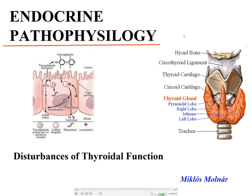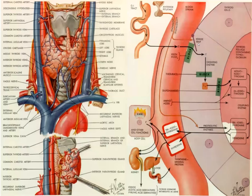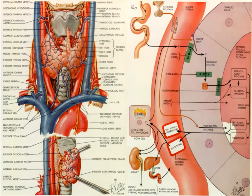Today's topic is the disturbance of thyroid function. This is the only organ that incorporates inorganic iodine into organic bindings. The gland weighs about 30 to 35 grams and is located in the front of the neck. It has three lobes — left, right, and middle. On palpation you can determine its size, and enlargement indicates a goiter. Other signs of thyroid dysfunction include swallowing disturbance or changes of the voice.